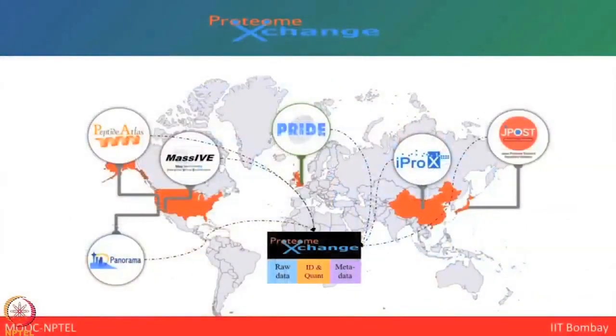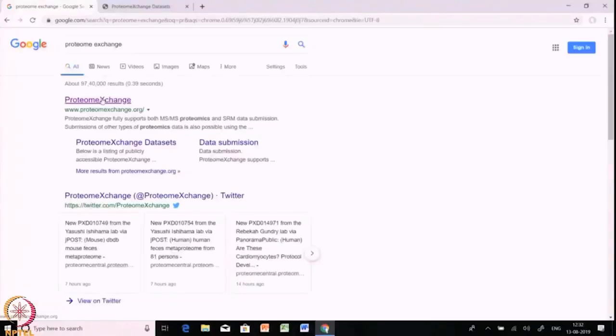Let me show you a glimpse of Proteome Exchange, which is a repository that is a collection of different databases like Peptide Atlas, MassIVE, PRIDE, jPOST, and Panorama. Proteome Exchange will help you download processed and pre-processed data. Let me give you a small hands-on on Proteome Exchange and show you how you can use it for downloading different proteomics experiment datasets for further experiments.